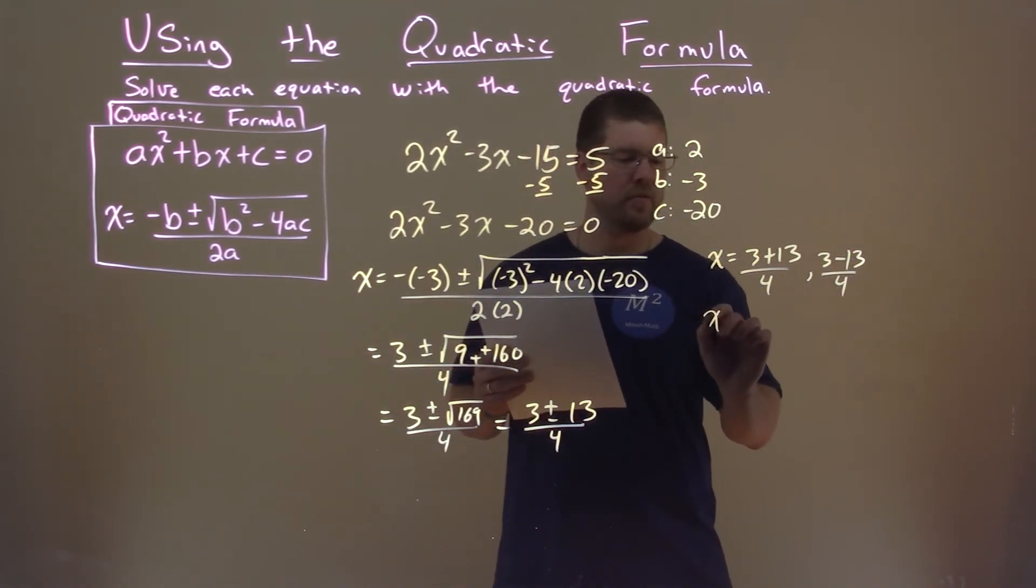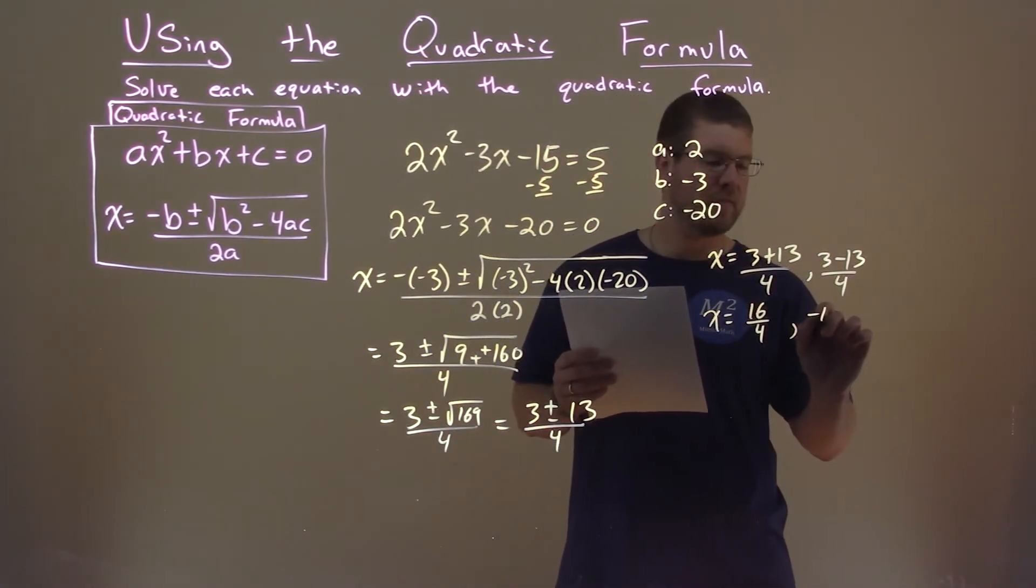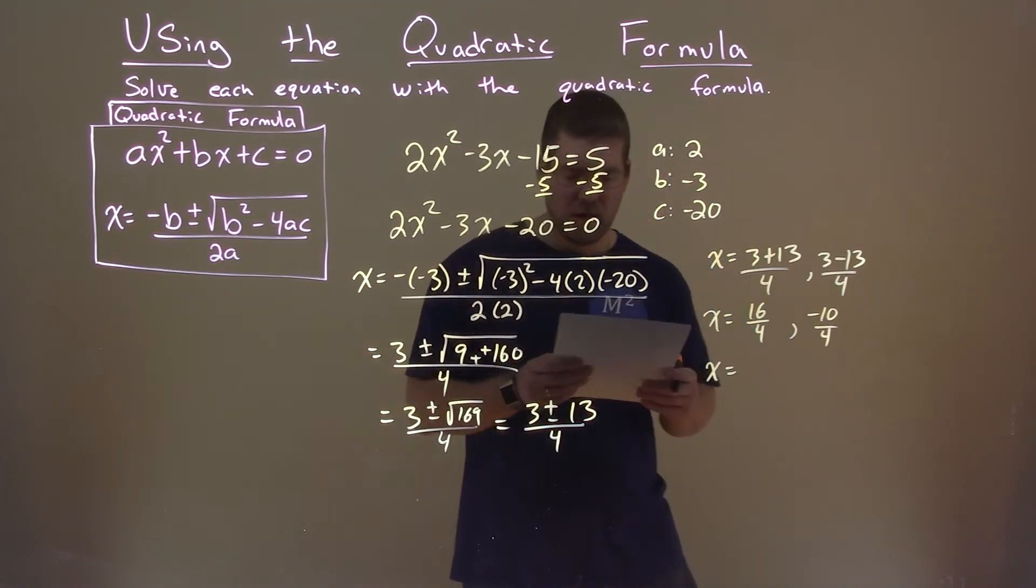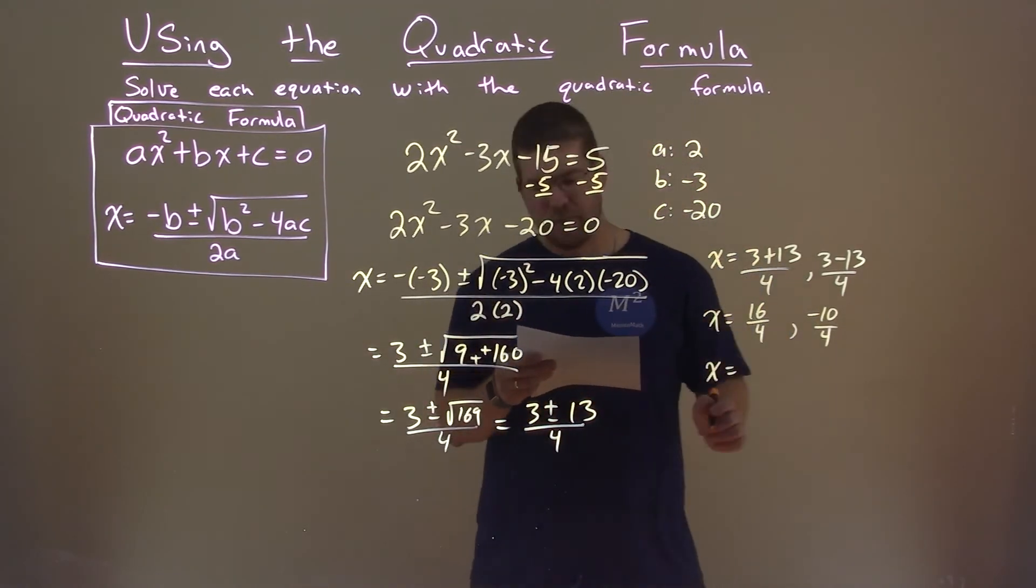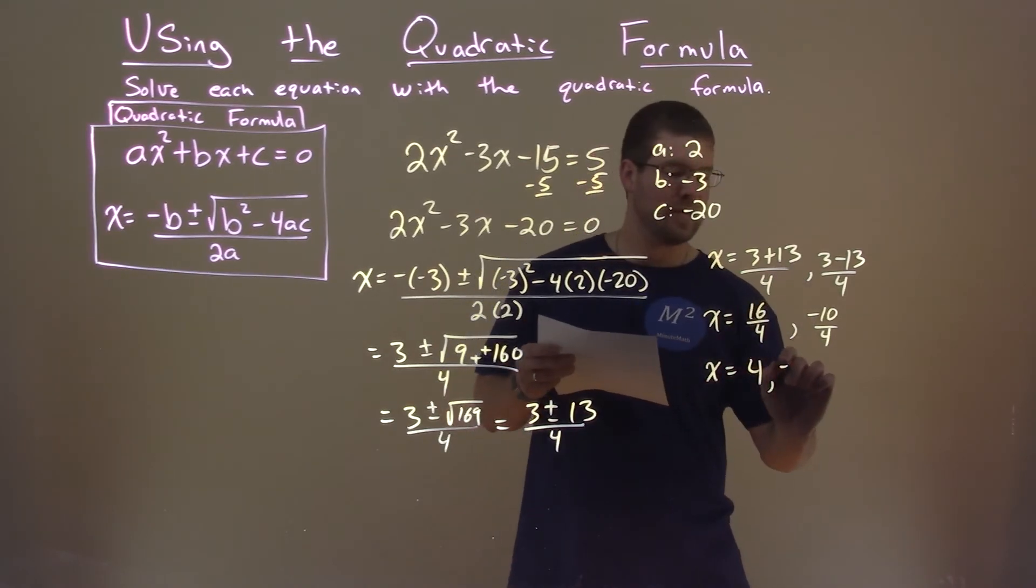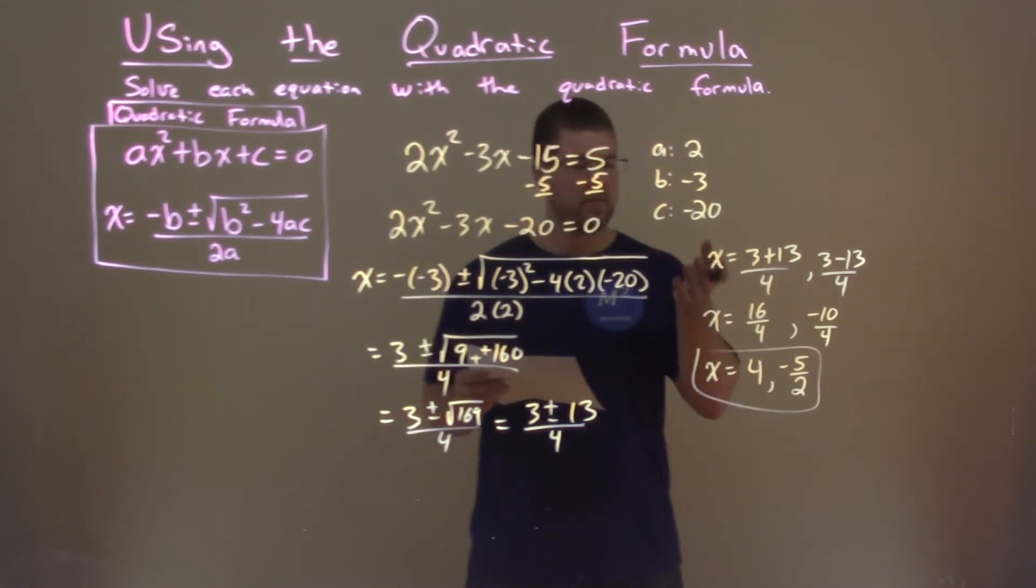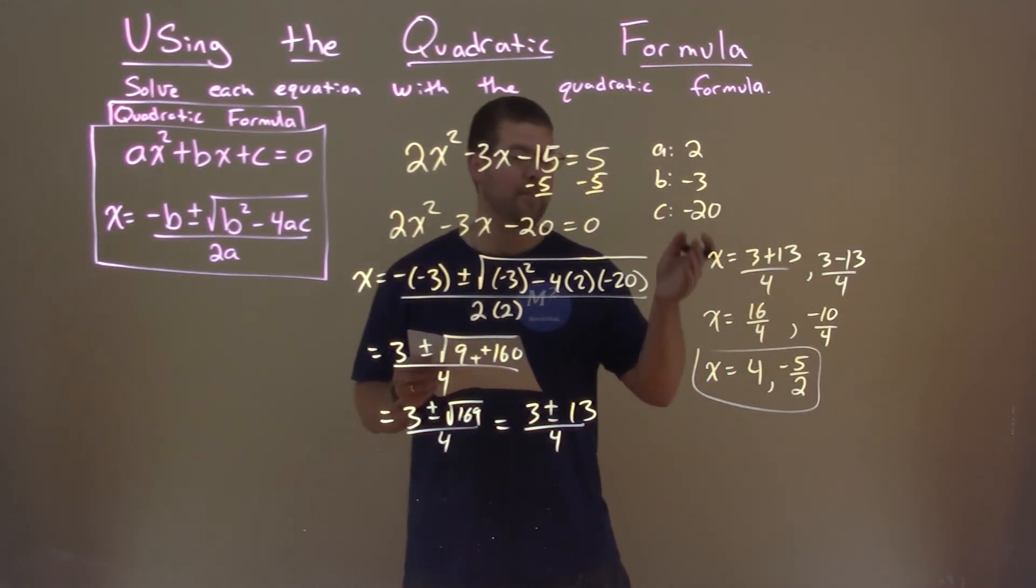And I'll simplify each one individually. 3 plus 13 is 16, over 4. And 3 minus 13 is a negative 10, over 4. Keep going with that. 16 divided by 4 is a 4. And negative 10 divided by 4 is a negative 5 halves simplified. And so our two answers are x equals 4 and negative 5 halves.